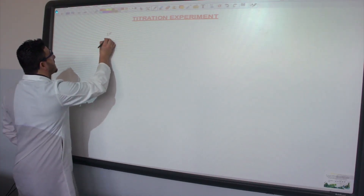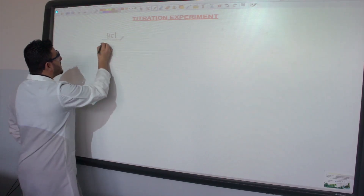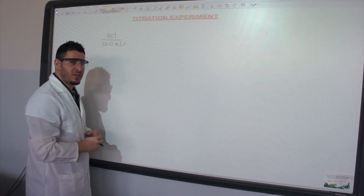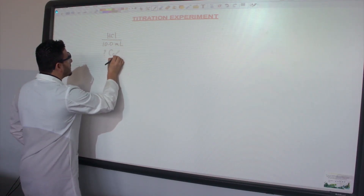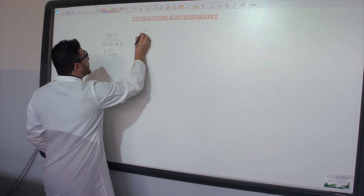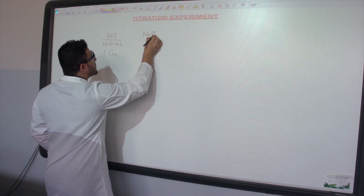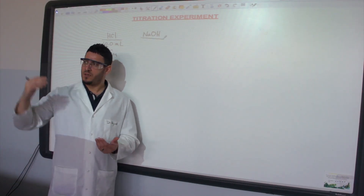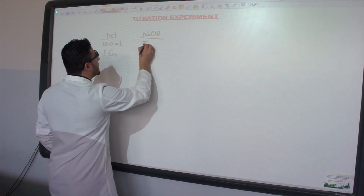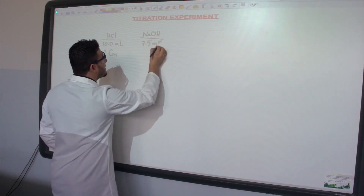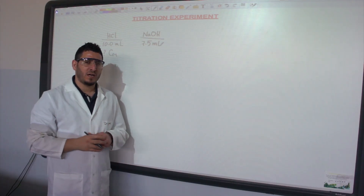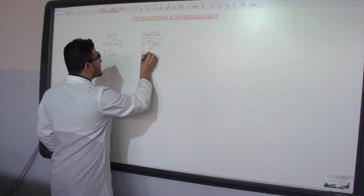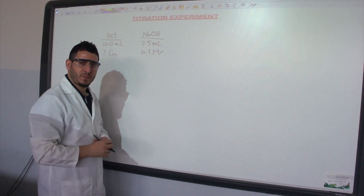Now that I'm done with my titration, I have recorded the following data. For HCl, I used 10 mL of the HCl solution and I will be looking for its molarity. For the sodium hydroxide, I added 7.5 milliliters from the burette, and the sodium hydroxide solution has a molarity of 0.1 M.